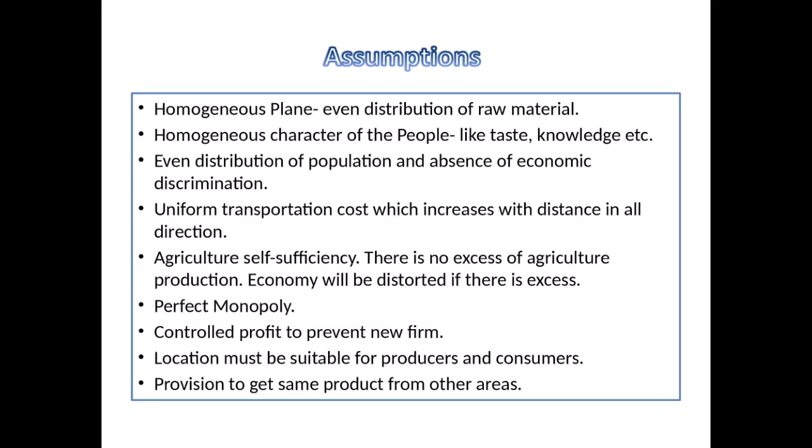He has taken further assumptions: there is a perfect monopoly in that region, meaning the production center is depended upon by some markets only, and this market or firm will not allow a new firm to enter. This location should be suitable for both the producer and the consumer. He also says that this area should have the provision of getting the same product from different other sources, but because of the present economic condition, the people depend on this production center for their activity.